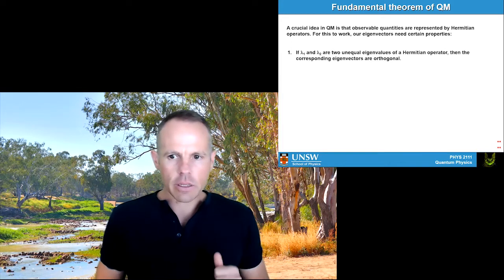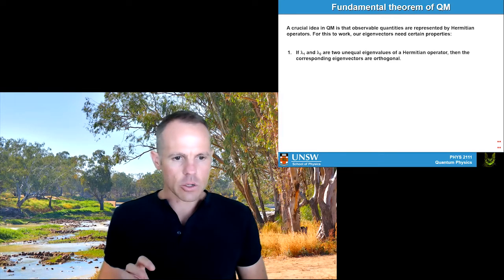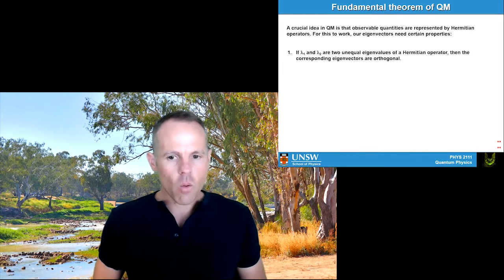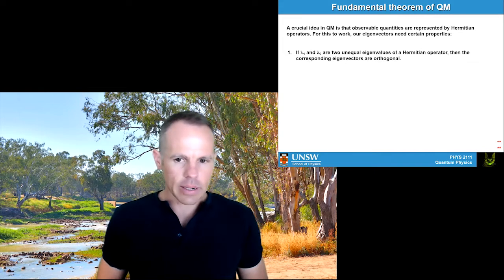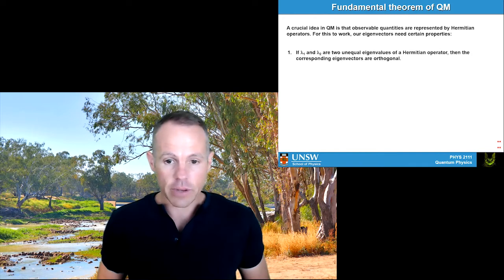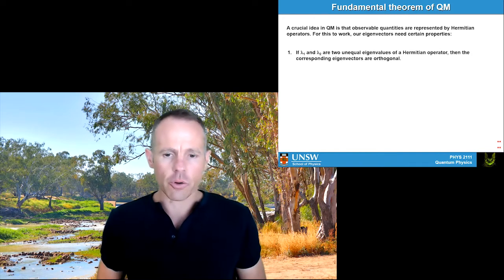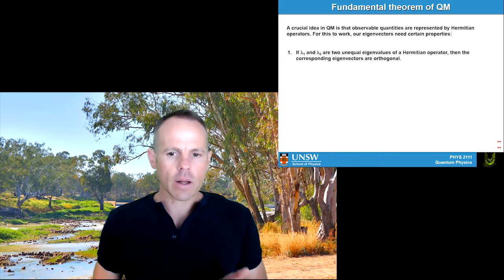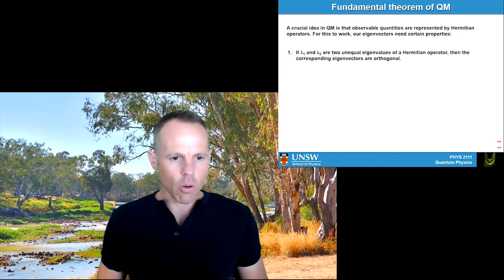There are basically three points to this fundamental theorem of quantum mechanics. We're going to prove the first one, because it's a really nice example of how to do algebra in bracket notation. The second one we'll dig into a little bit. And then the third one is really just an axiom, so we'll go through that fairly quickly.